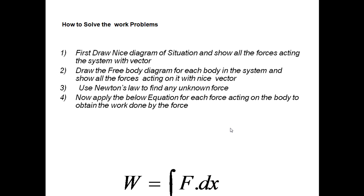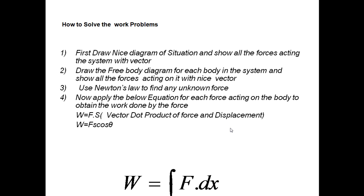Next, apply the work equation for each force acting on the body to obtain the work. Once we know the force, we apply W = F·s, which is the vector dot product of force and displacement. This can be simplified as W = Fs cosθ, where θ is the angle between the force and displacement.